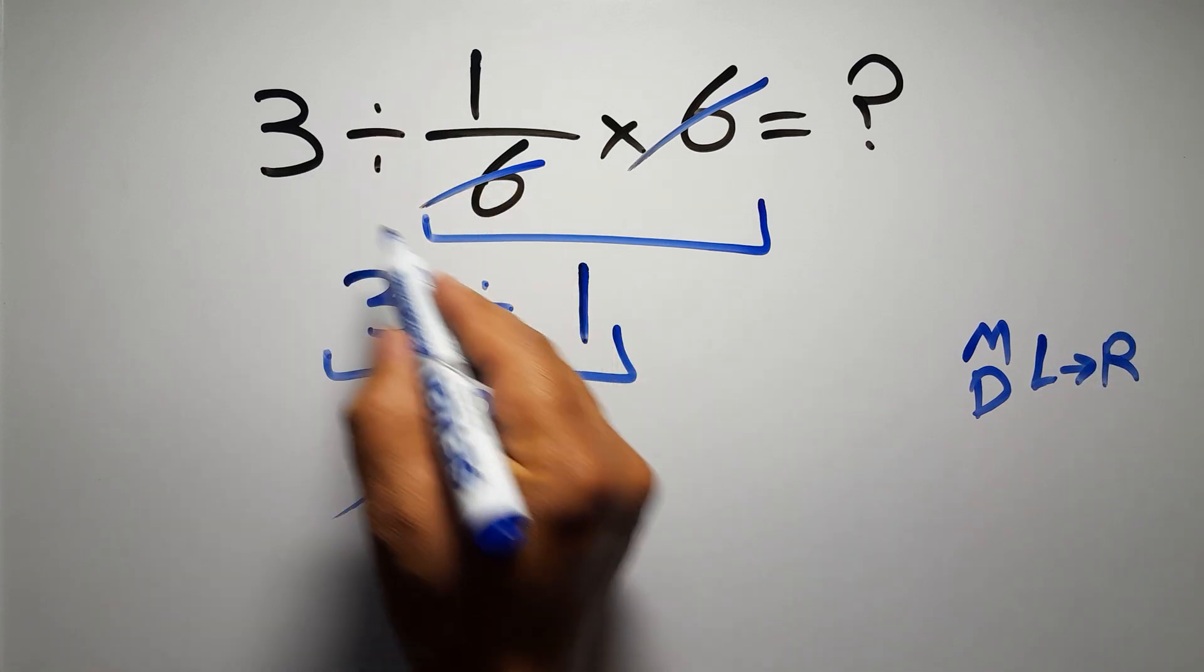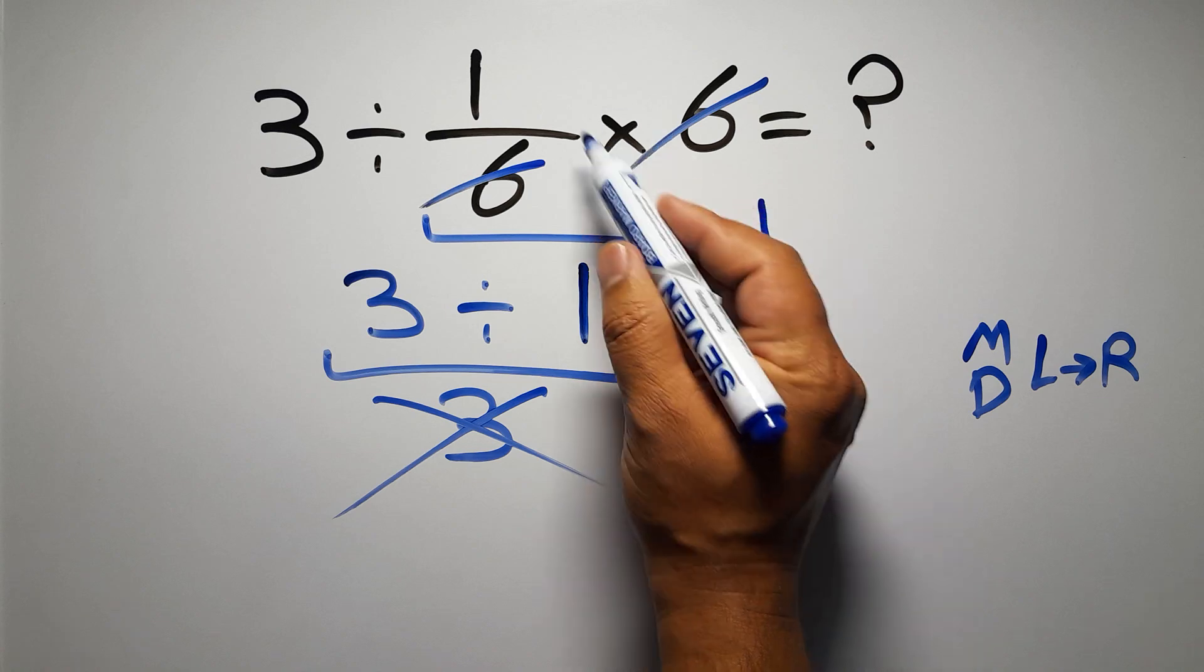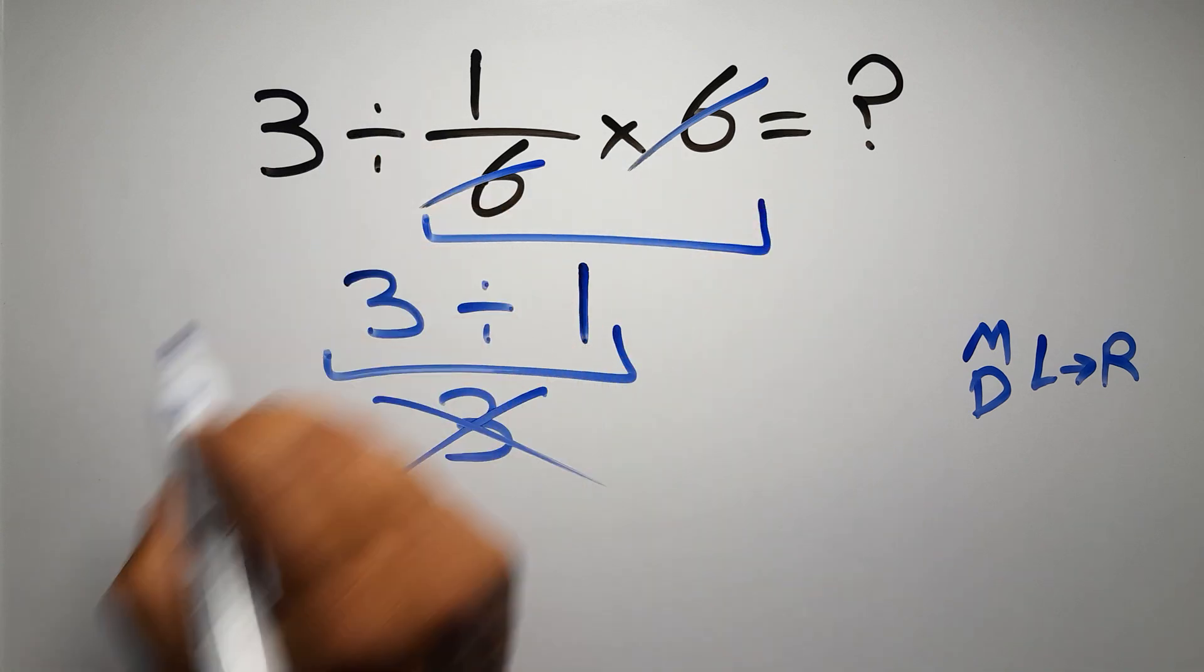Here, first we have to do this division, then this multiplication. If we do this multiplication before this division, it is wrong.